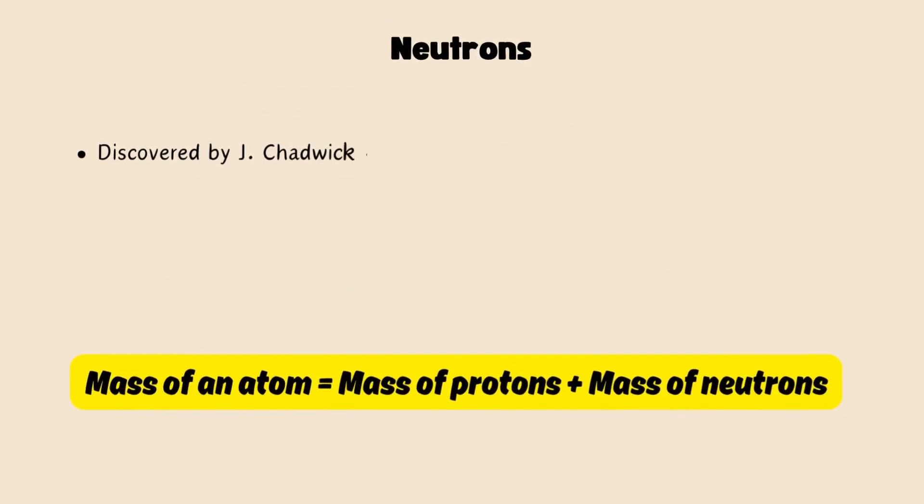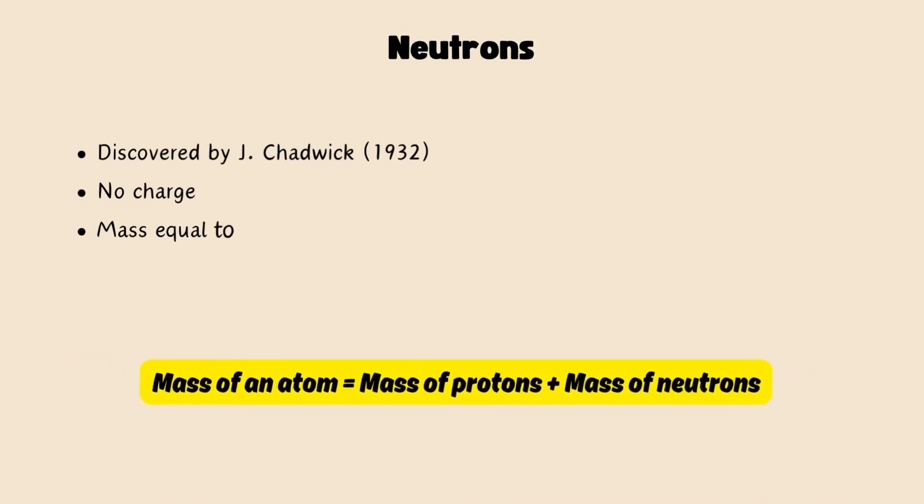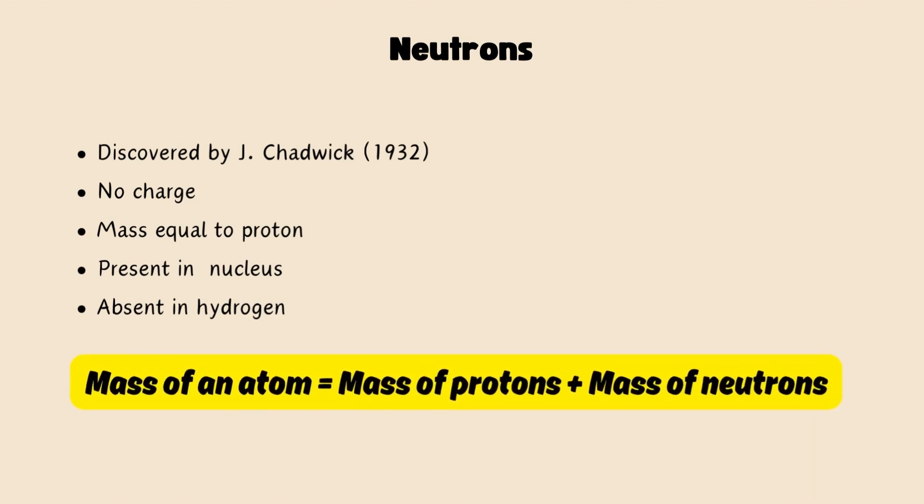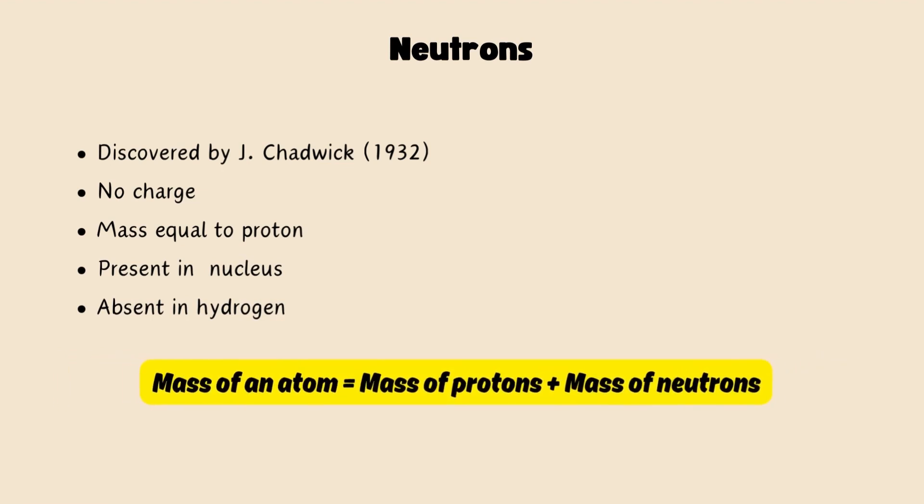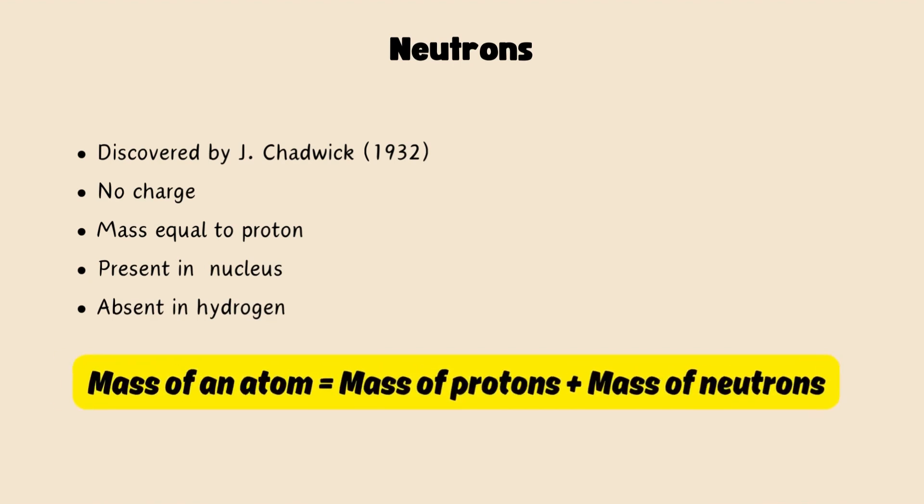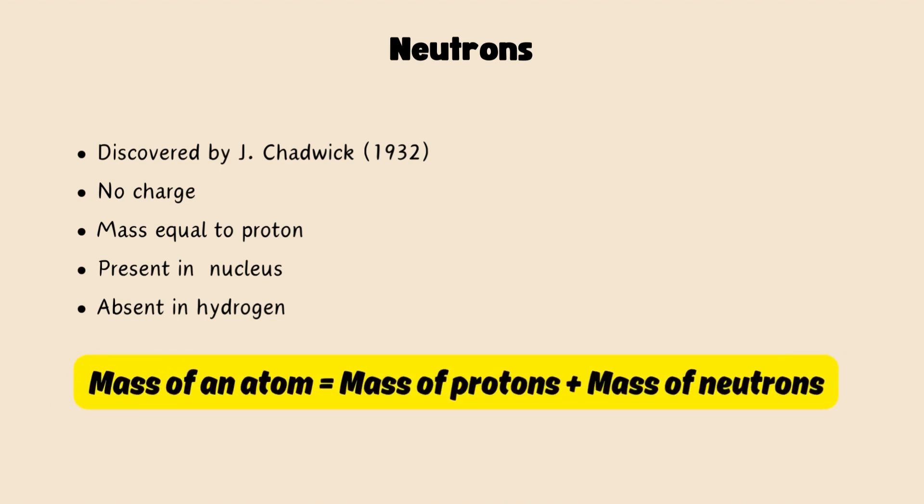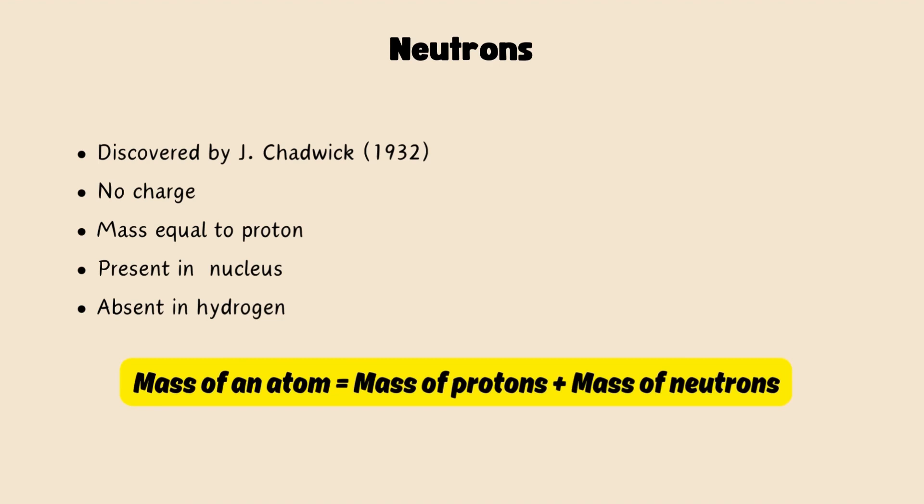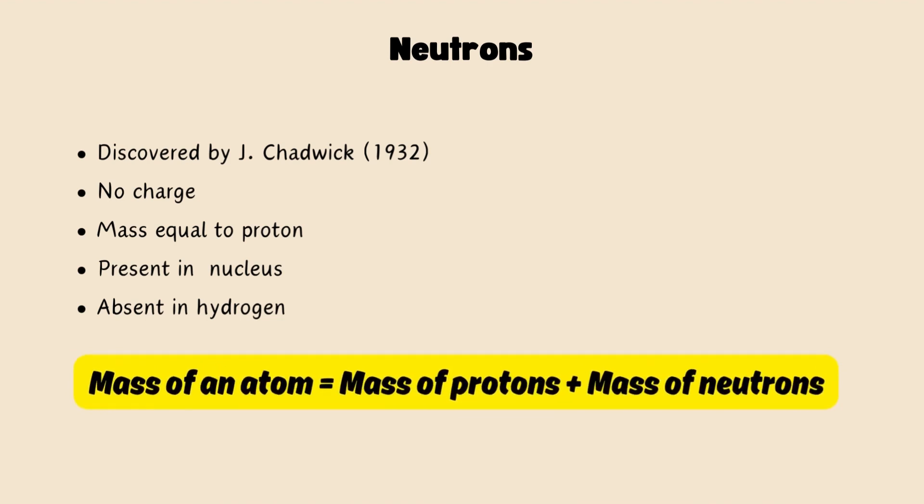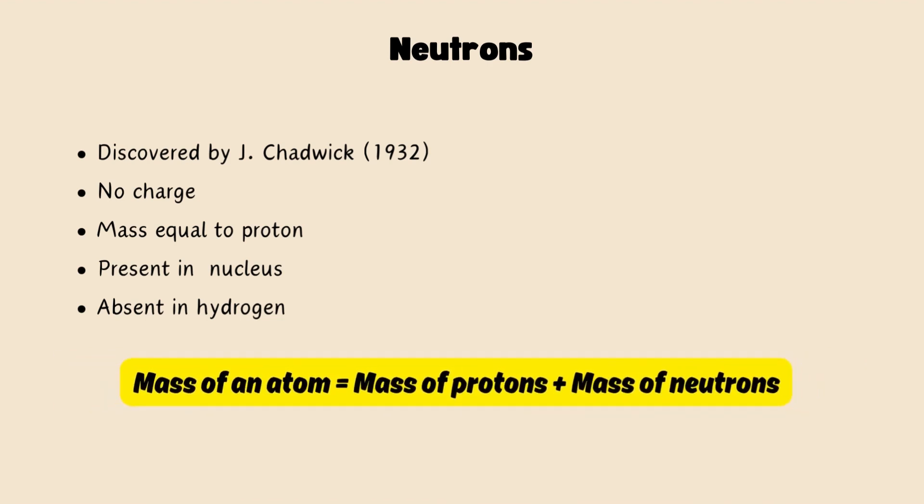There was also one more subatomic particle discovered named neutrons. Neutrons were discovered by J. Chadwick in 1932. This subatomic particle had no charge and has a mass nearly equal to that of a proton. Neutrons are present in the nucleus of all atoms except hydrogen. An important formula for mass of an atom was given: mass of an atom equals the sum of the masses of proton and neutrons present in the nucleus.